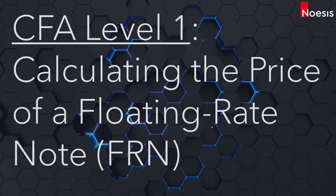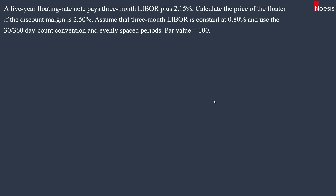In this video, we'll look at an example on calculating the price of a floating rate note, or FRN. In this example, we have a 5-year floating rate note that pays 3-month LIBOR plus 2.15%. Calculate the price of the floater if the discount margin is 2.5%. Assume that 3-month LIBOR is constant at 0.8% and use the 30/360 day count convention and evenly spaced periods, with a par value of 100.